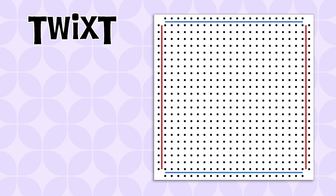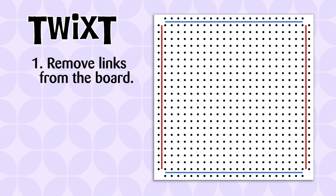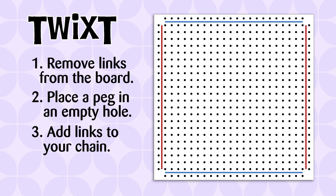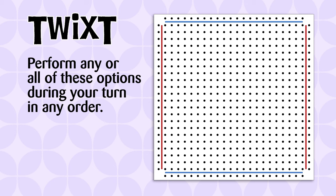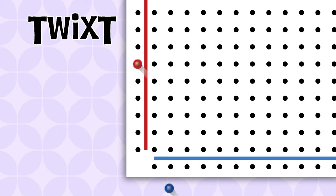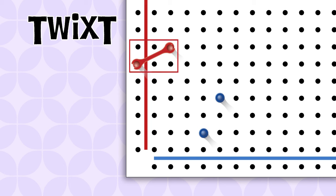On each turn, a player has just three choices. First, remove any number of your own links from the board — this doesn't happen often, but it could be a valuable tactic. Two, place one peg of your own color in any vacant hole except the opponent's border rows. And three, add as many links to the board as you want, properly placed between pegs and connected to any previously placed link. A player can perform any or all of these options in a single turn and in any order. Proper placement of a link is between pegs at the two corners of a six-hole rectangle, and you can't place a link where another link already occupies that space.